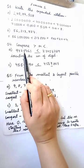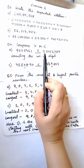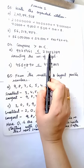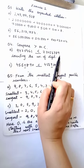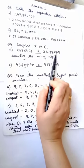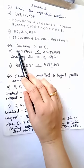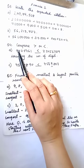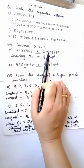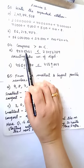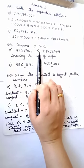Counting the first number: 1, 2, 3, 4, 5, 6, 7 — that is 7 digits. Counting the second number: 1, 2, 3, 4, 5, 6, 7, 8 — that is 8 digits. So here you can see there are 8 digits and 7 digits. Directly you can see that the 8-digit number is the greater number than the 7-digit number, so you can put the greater sign over here.